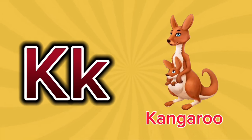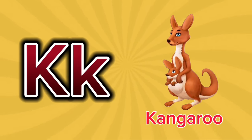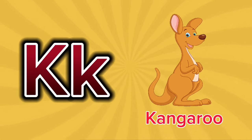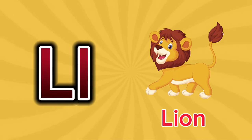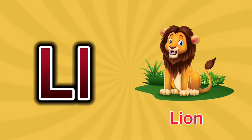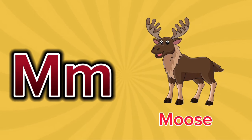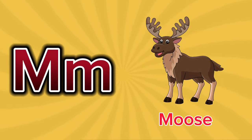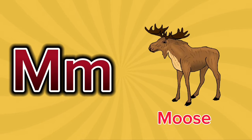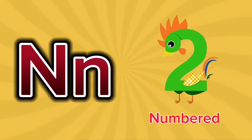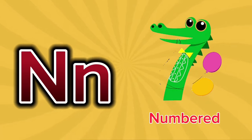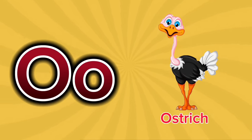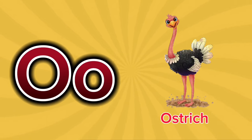K is for Kangaroo. K-K-Kangaroo. K is for Kangaroo. K-K-K. L is for Lion. L-L-Lion. L is for Lion. L-L-L. M is for Moose. M-M-Moose. M is for Moose. M-M-M. N is for Newt. N-N-Newt. N is for Newt. N-N-N. O is for Ostrich. O-O-Ostrich. O is for Ostrich. O-O-O.